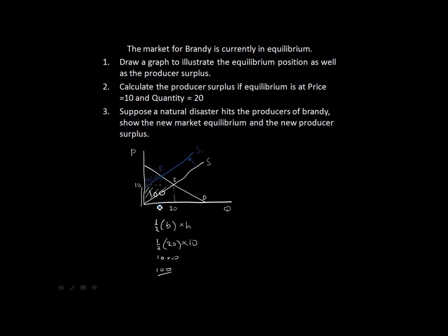And again, if we now have values, we'll put in some arbitrary values of 10 and 20, well, in this case, and we can again calculate this area to find our new producer surplus. And we see that the natural disaster, we can graphically see that it has decreased the value of our producer surplus.